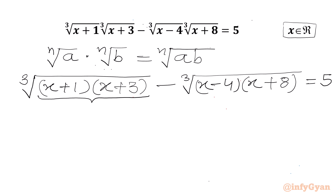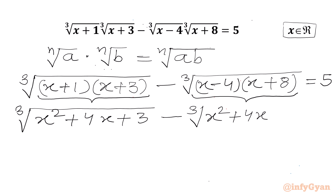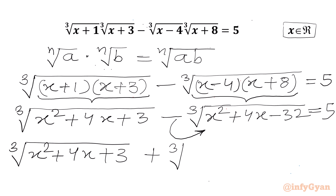Now we will multiply these two brackets and these two brackets. We will get cube root of (x²+4x+3) minus cube root of (x²+4x-32) equal to 5. Now I will take this minus sign into the radical, so we will get cube root of (x²+4x+3) plus cube root of (-x²-4x+32) equal to 5.